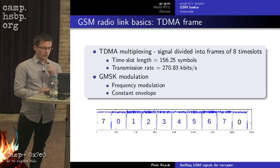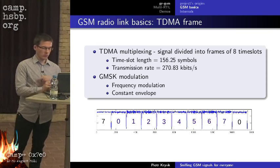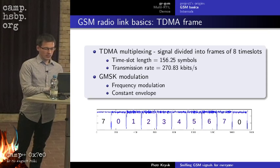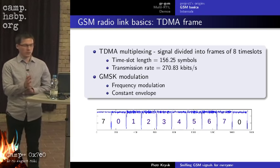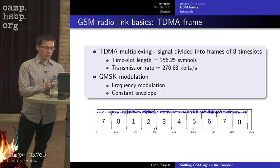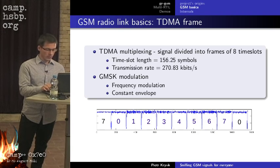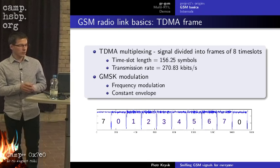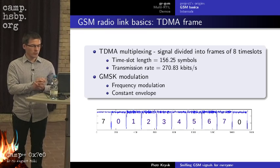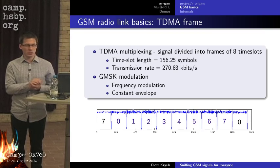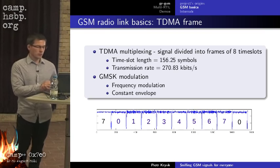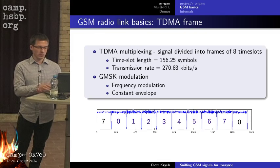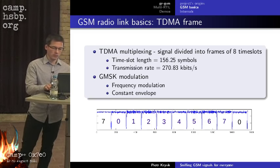Between each burst there is a guard period when the signal power goes down. These guard periods separate each time slot. On the broadcast channel, all bursts have the same power, with a burst in each time slot. For other channels, bursts are only transmitted when needed and with the power that is needed, so powers can be different in different time slots.